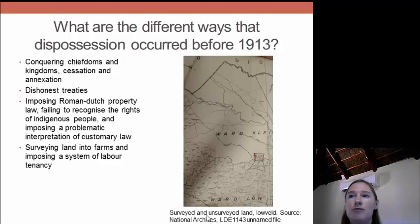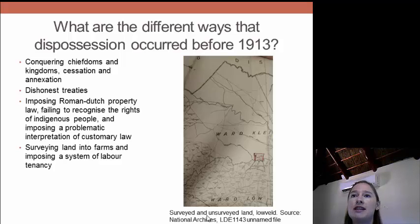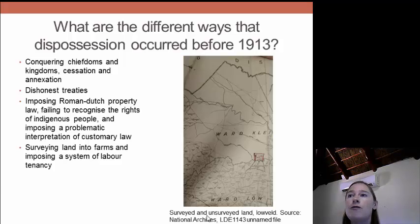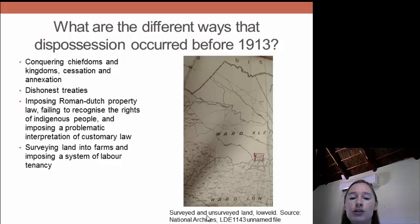What are the different ways that dispossession occurred before 1913? There are a number of different ways, and it's helpful to look at them as distinct types of processes because it helps avoid confusion. The first, which is most obvious and happens especially in the 1800s, is conquest — where the colonists, the British or the Boers, forced African kingdoms and chiefdoms and, having won by force, compelled chiefs and kings to cede land to them. Ceding land means basically signing it away, saying we no longer have authority over this land, it now belongs to you. So losing these wars of conquest was one aspect of dispossession.